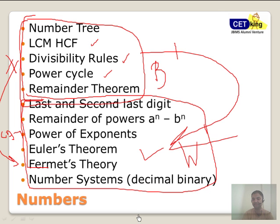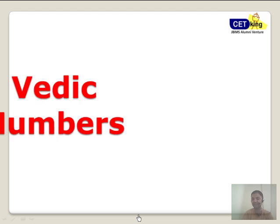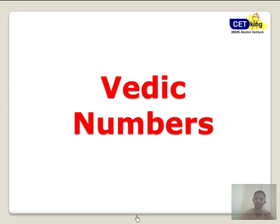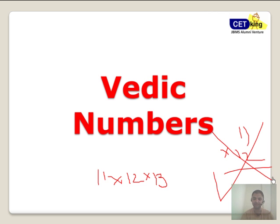Here I am going to give you a glimpse of what we are going to cover in the workshop. Let me start with Vedic numbers. Vedic numbers is CET King's innovative product. Vedic number is basically breaking things into parts. It can be breaking down calculations, anything. Suppose you get a calculation like 11 into 12 into 13.